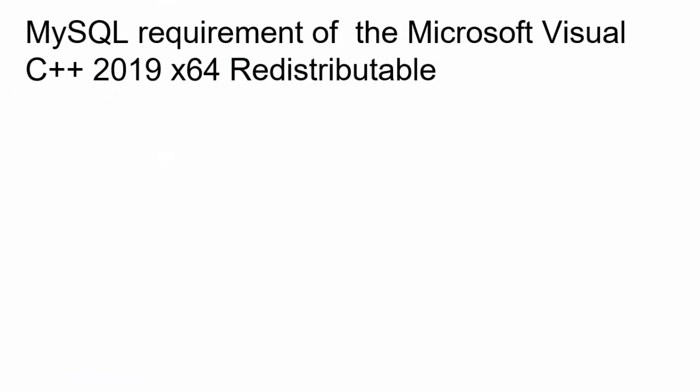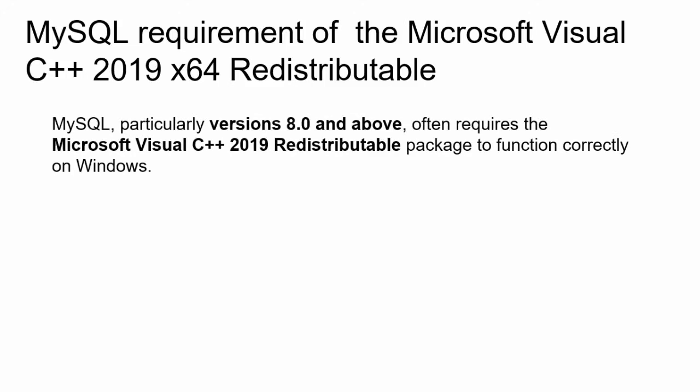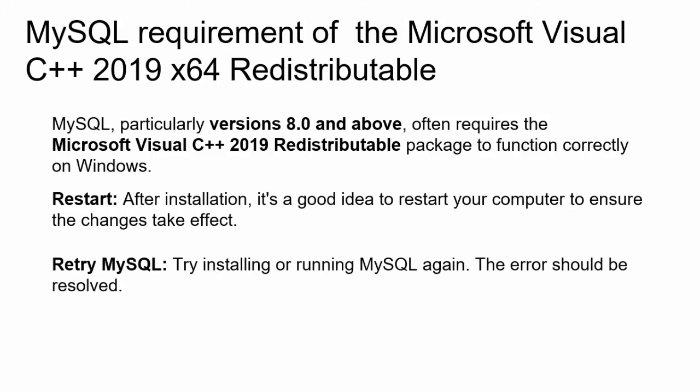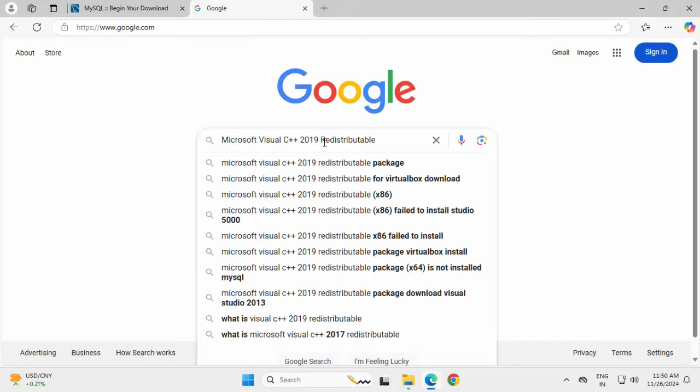Click Finish. Before we proceed further, I want to highlight a few things. MySQL requires the Microsoft Visual C++ 2019 X64 redistributable. Versions 8 and above often require this package to function correctly on Windows. After installation, it's better to restart your system and then retry the MySQL installation. In Google, specifically search for 'Microsoft Visual C++ 2019 redistributable'.